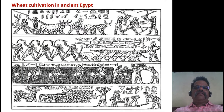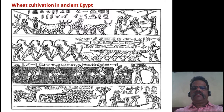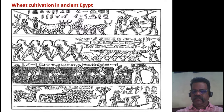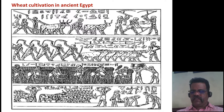This picture shows wheat cultivation in ancient Egypt, illustrating how humans started domestication of cattle and crops for their benefit — the practice known as agriculture.